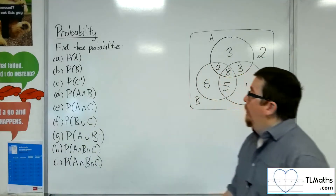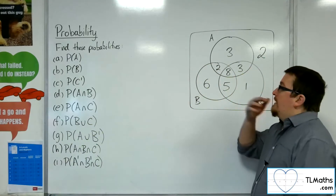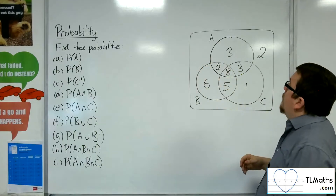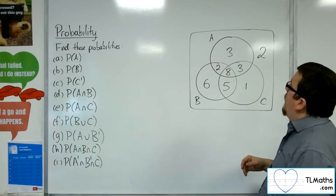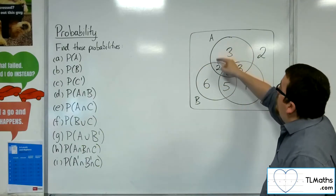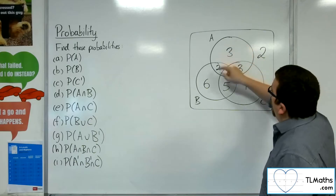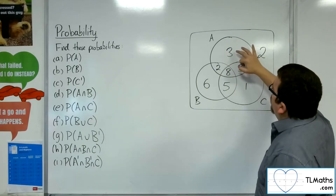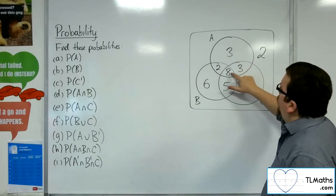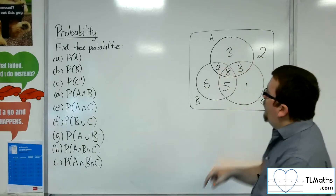Let's start off with probability of A. Probability of A is anything that is within that circle of A. So we've got 3, 6, 14, 16.